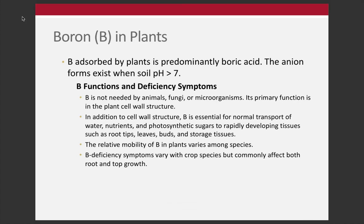Boron is an anion that exists primarily and is cycled in organic form — much like sulfur and nitrogen, cycled primarily through organic matter. Interestingly, a lot of these micronutrients that are essential elements to plants are also essential elements to us. Boron is not one of those. Boron is specific for plants, primarily functioning in the structure of plant cell walls. We don't have an essential need for boron — not for animals in general.